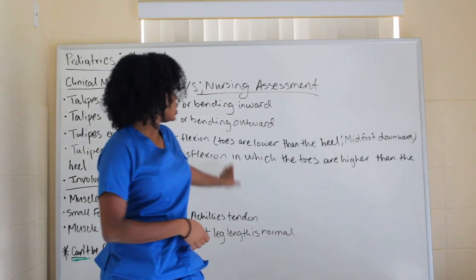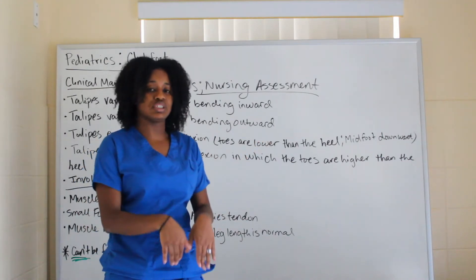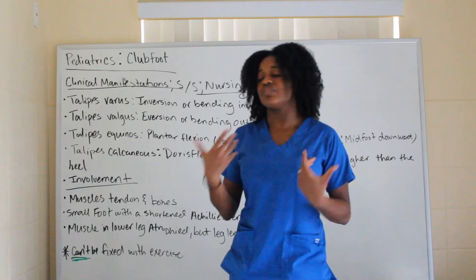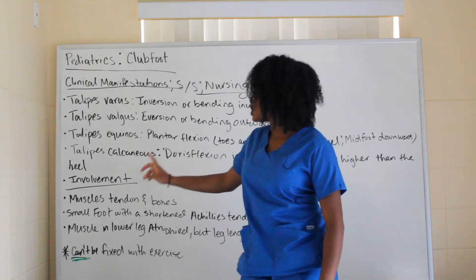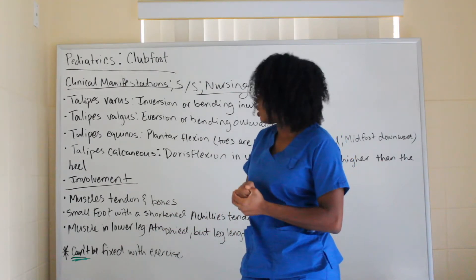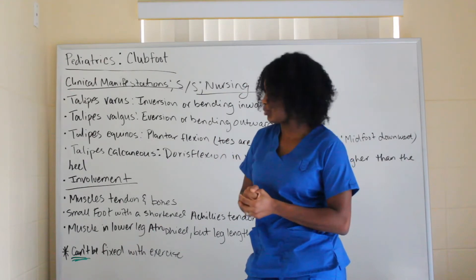Last is talipes calcaneus, which is dorsiflexion of the foot where the toes are higher than the heel. These types also involve muscles, tendons, and bones within the foot, so this is not going to be an easy fix.